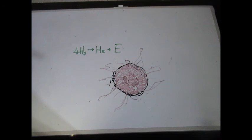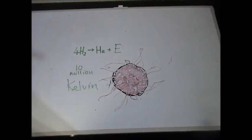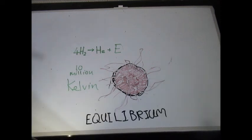For thermonuclear fusion to take place, where four hydrogen atoms are fused forming one helium atom and energy, the temperature of the core must reach 10 million degrees Kelvin. As the rate of fusion increases, the energy produced within the core equals the energy radiated from the surface.